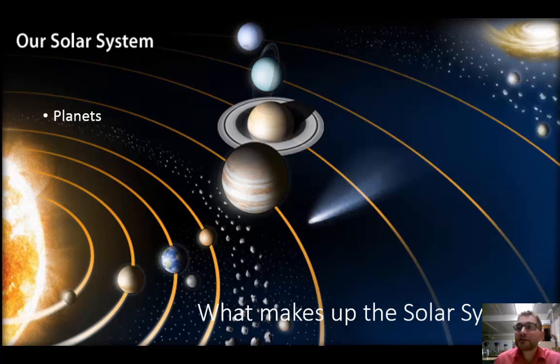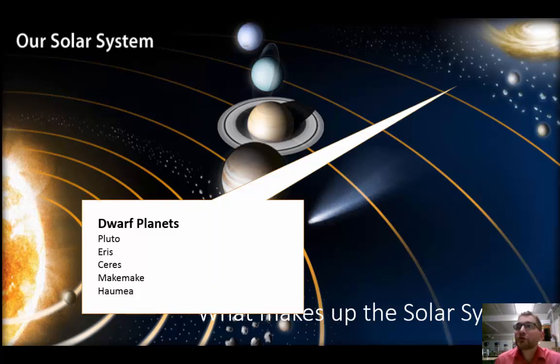Outside of those planets are also the dwarf planets. The dwarf planets are Pluto, Eris, Ceres, Makemake, and Haumea.